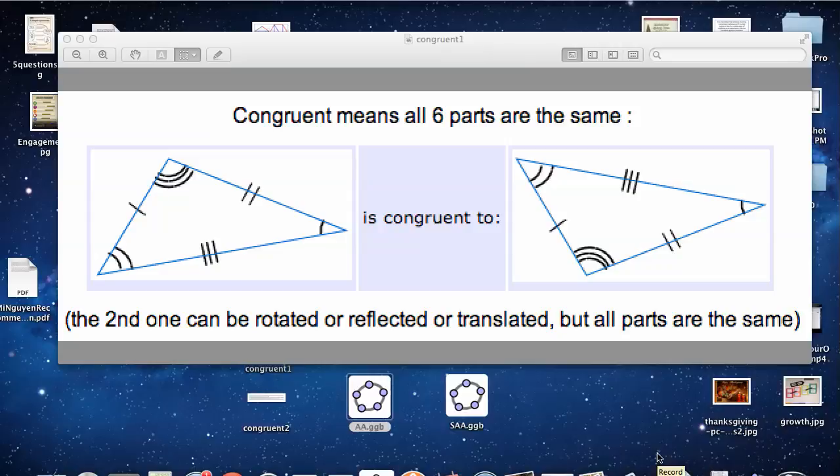We're talking about congruent triangles. How many parts do we need to know so that we can make exact duplicates of triangles and not have to measure all six parts?